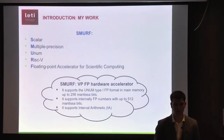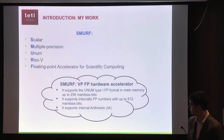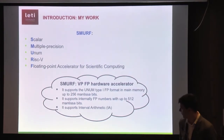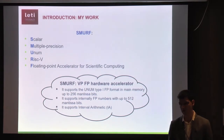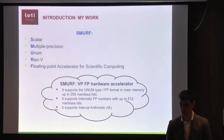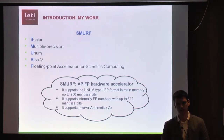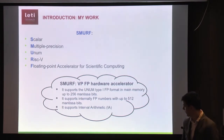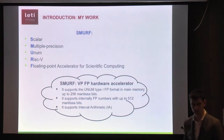Now I move to my work. What I am presenting is my unit, called SMURF — a Scalar Multiple Precision UNUM RISC-V Floating Point Accelerator. My unit is a coprocessor which supports the UNUM type 1 format in main memory, up to the UNUM environment corresponding to 256 bits of mantissa. It supports internally another type of format which can be extended up to 512 bits of mantissa, and it also supports interval arithmetic, because UNUM type 1 supports interval arithmetic.